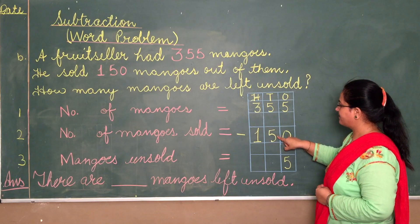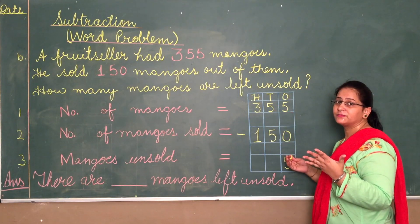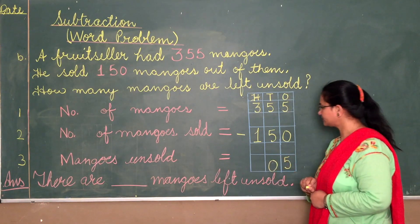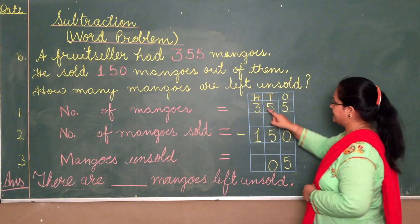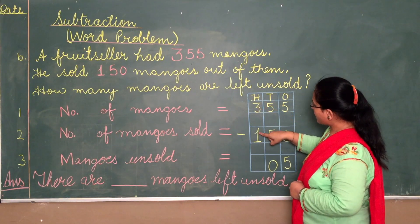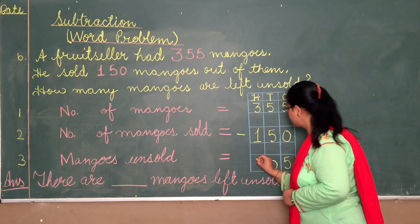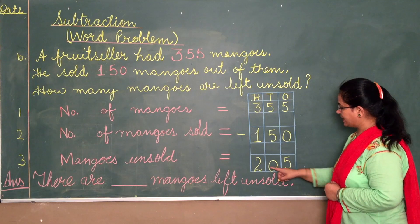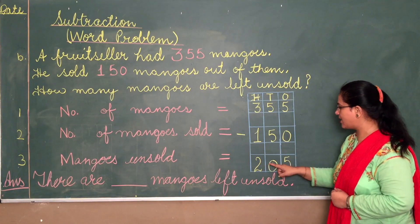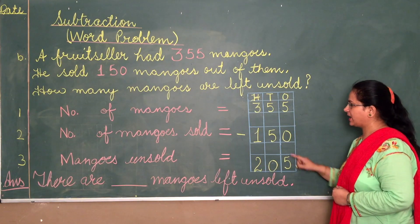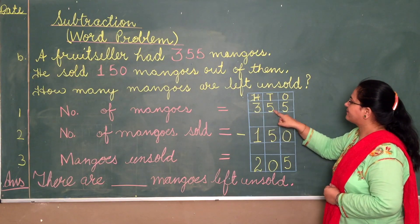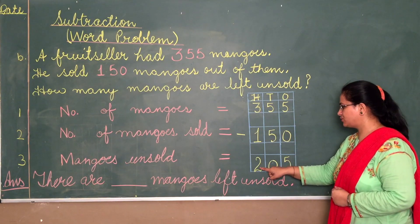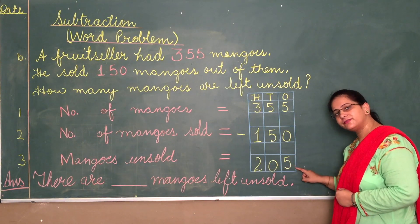I forgot to put the minus sign — we have to put it first. So take away 5 from 5: that gives 0. Now the hundreds house: take away 1 from 3, which is 3 minus 1 equals 2. So the answer is 205. That means 355 minus 150 is equal to 205.